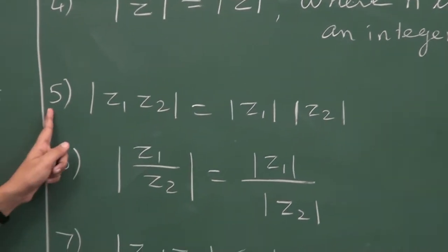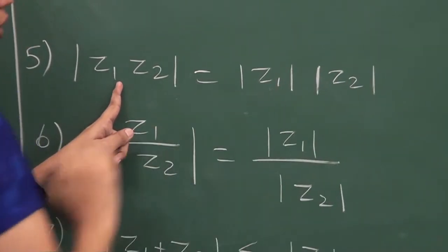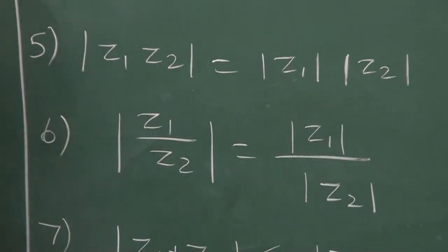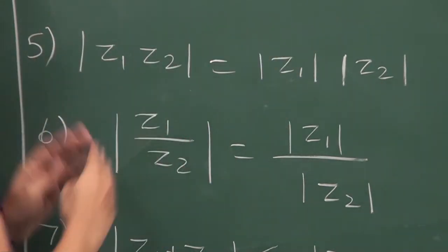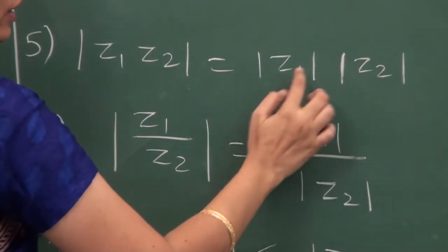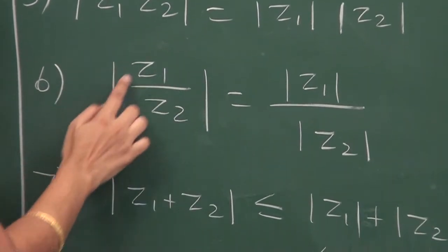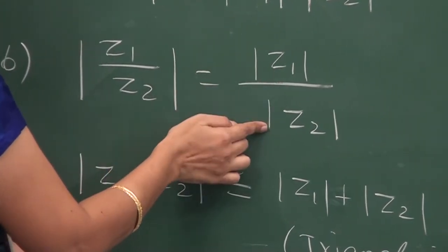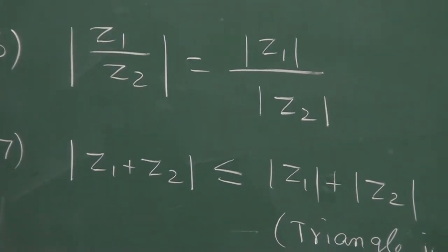The fifth property is: the modulus of the product is equal to the product of their individual moduli. That is, modulus of z1·z2 equals modulus of z1 into modulus of z2. We can extend this result for any number of complex numbers. Likewise, in division, the next property states that the modulus of the quotient is equal to the quotient of their individual moduli. These results hold for multiplication and division, but for addition and subtraction something different applies.